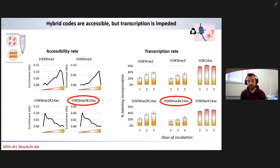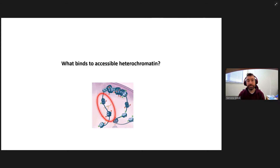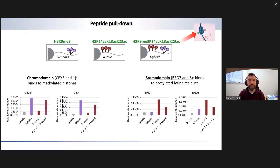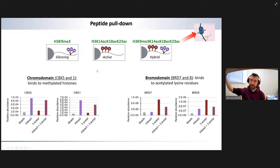This suggests that the hybrid histone codes are probably in open chromatin but somehow prevent excessive transcription in these domains. So we wanted to find out more: what kind of proteins recognize these domains and do they prevent transcription? The next part of the work has been studying what binds these hybrid codes. We have in the lab synthetic peptides that contain different amounts of modifications, including combinations of modifications that model those hybrid codes, and we use them to fish out proteins from a cell lysate.